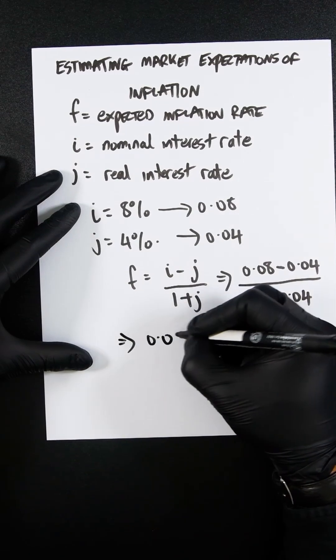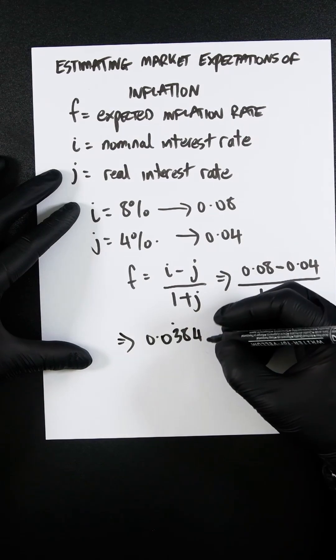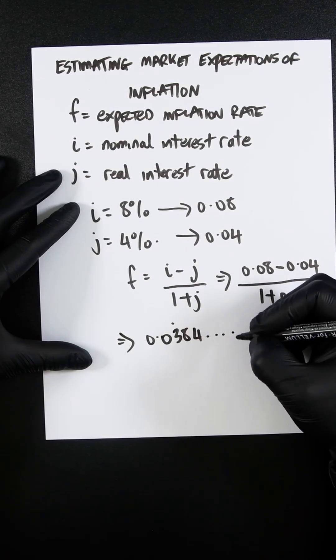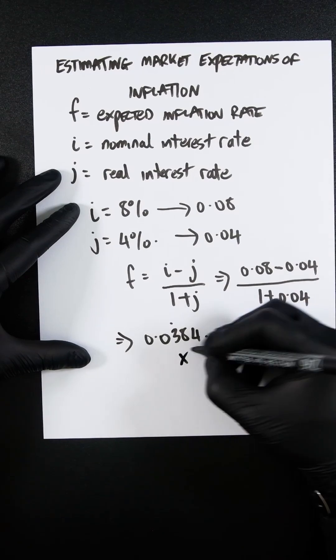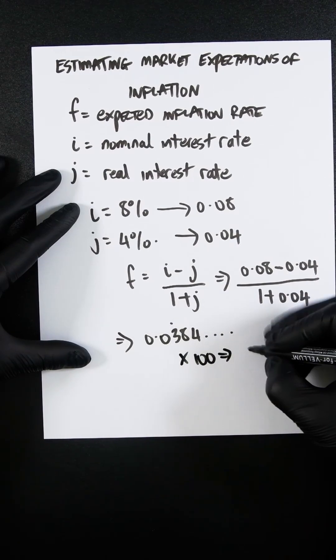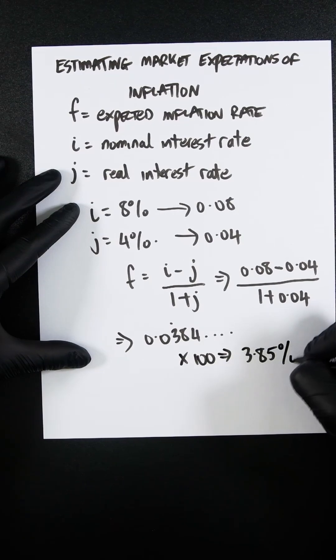out, you're going to get 0.038, that's a little dot over there that recurs, and so on. If you want to turn this into a percentage, we multiply it by 100, so it's going to be 3.85%.